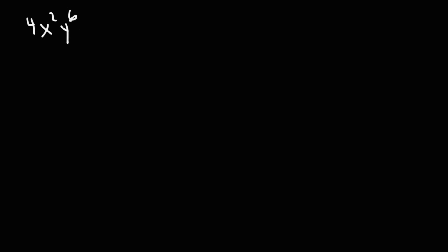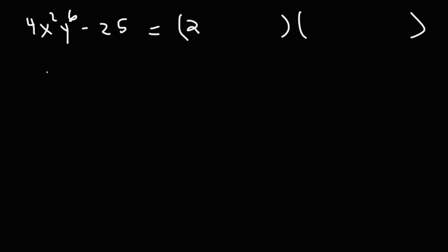Now let's move on to the next type of problem. Try: 4x squared y to the 6th minus 25. The square root of 4 is 2, the square root of x squared is x, and the square root of y to the 6th — divide by 2 — gives y cubed. So the square root of 4x squared y to the 6th is 2xy cubed. The square root of 25 is 5. So the answer is 2xy cubed plus 5 times 2xy cubed minus 5.